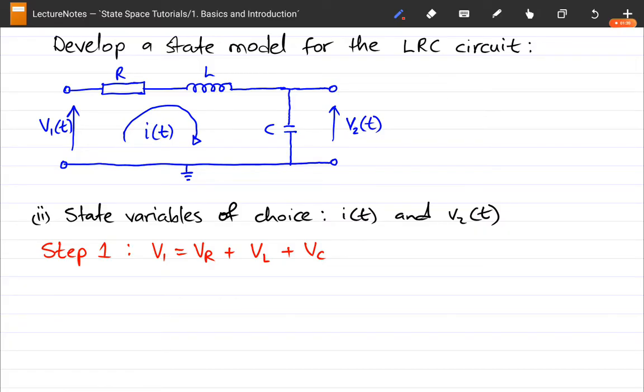And then in the previous video, we pointed out that this was VC, this was VL, and this was VR. And one thing of note is that VC equals V2, and VL equals L dI/dt. And I think we said I equals C dV2/dt. So that's something we can take from there instead of having to derive this stuff all over again.